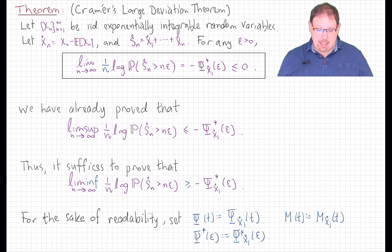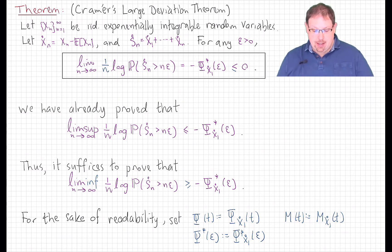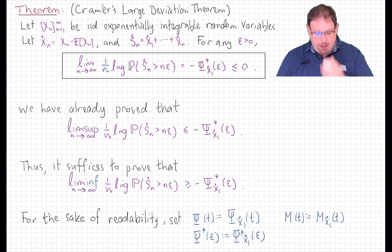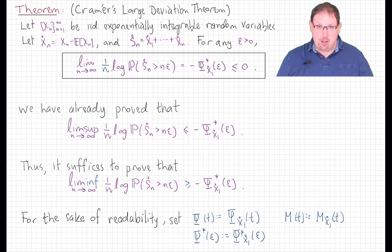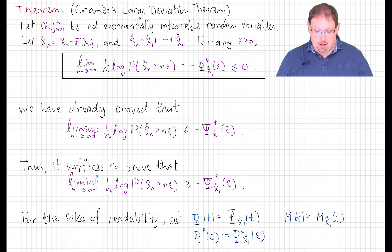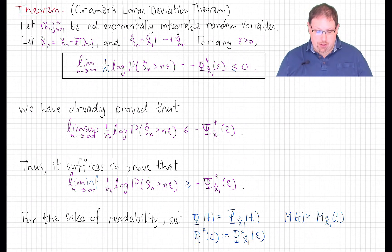If xn is a sequence of iid, exponentially integrable random variables, then the probability that the centered sum of those random variables exceeds n times any positive parameter epsilon is precisely exponentially small in n. That is, the log of that probability divided by n has a limit, and that limit is exactly equal to the negative of the Legendre transform of the cumulant generating function of the underlying centered distribution at the parameter epsilon. That quantity is non-positive, and in fact strictly negative for all sufficiently large epsilon.